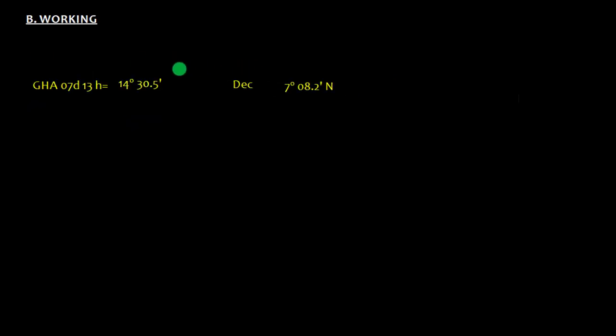Now let's focus on working. First of all, we need to find GHA, that is Greenwich Hour Angle for 7th day and 13 hour. We need to look at the almanac and find the declination. We also need to observe whether the declination is increasing or decreasing.